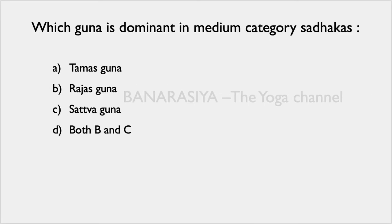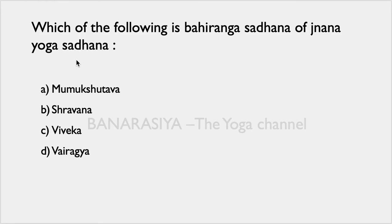The next question: which guna is dominant in the medium category of sadhaks? Options are Tam gun, Raj gun, Satv gun, or both Raj and Satv. The medium category sadhaks fluctuate — they are in a state where Raj and Satv both keep rising. When Satv rises and then the sadhak becomes lax due to Maya or samskaras, Raj gun increases. So both Satv and Raj are dominant in medium category sadhaks.